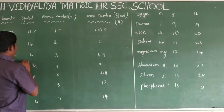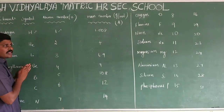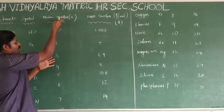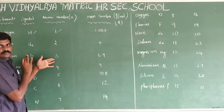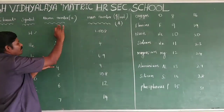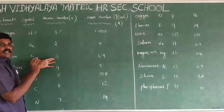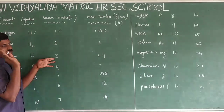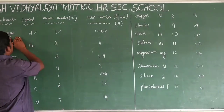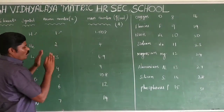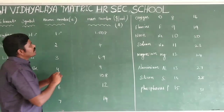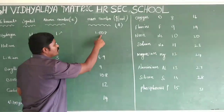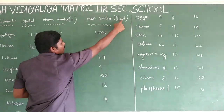For example, Lithium: the number of protons is 3, so the atomic number is also 3. Atomic number means the number of protons present in the nucleus. Hydrogen's atomic number is 1, and its mass number is 1.008 grams per mole.